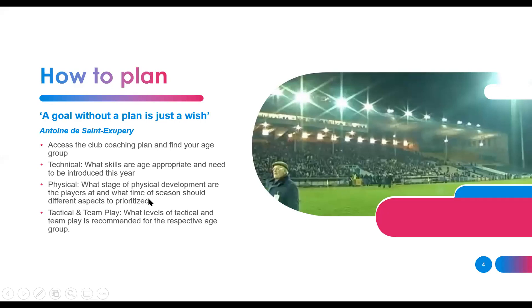From a physical point of view, consider what stage of physical development the players are at and what aspects should be prioritised at different times of the season. As players get older this becomes more specific. For tactical and team play, consider what level is recommended for the prospective age group. For a group of seven-year-olds, just getting to know each other and being able to pass the ball might be enough. At under-13 or 14, it might involve more team play in specific scenarios on the pitch.